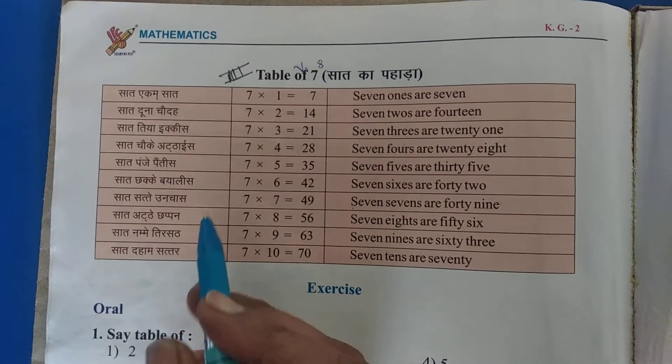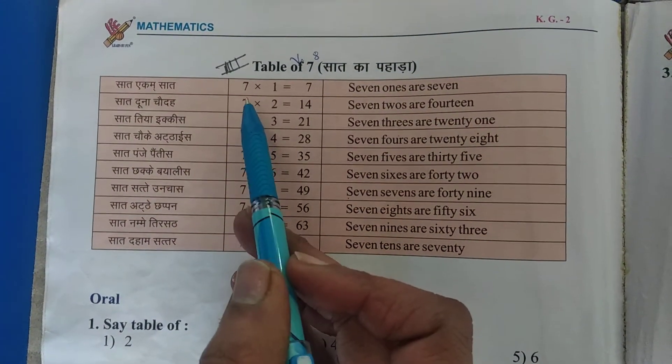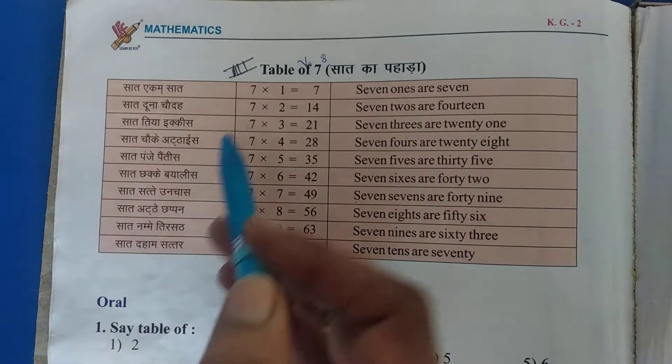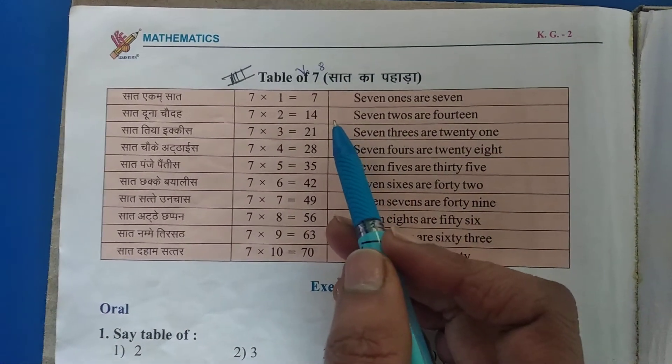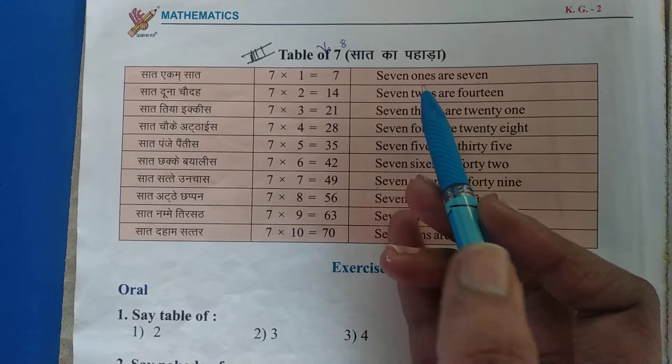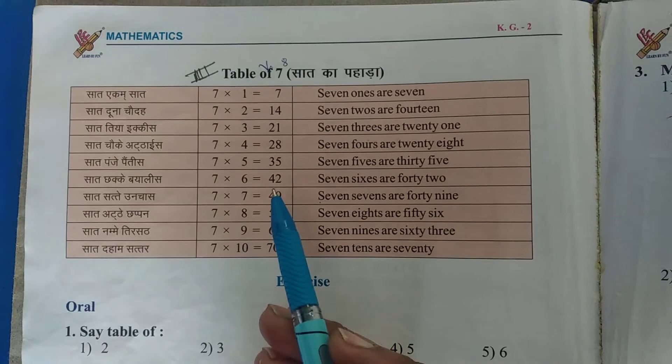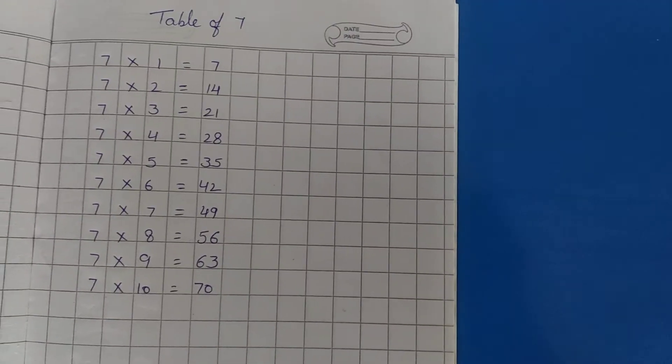So children, in your Maths coursebook, page number 18, the 7 table is given. You can help. And how to do the pronunciation is given. 7 ones are 7. Like that, you have to read and learn. Okay? Now,